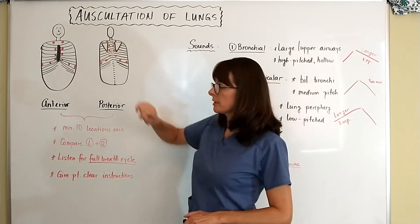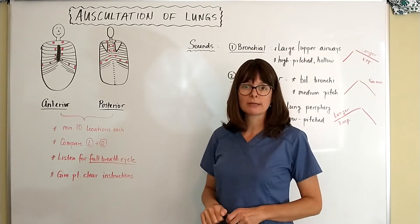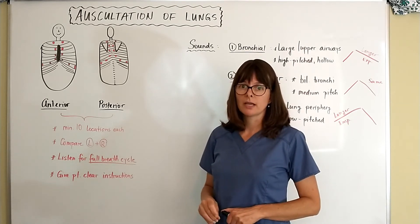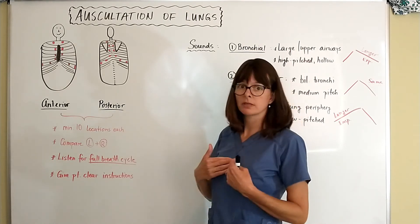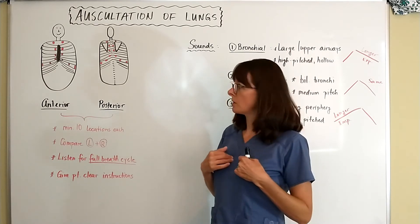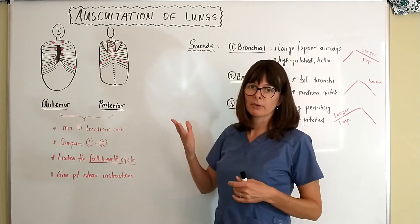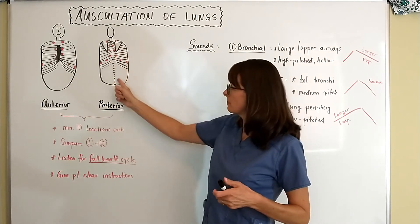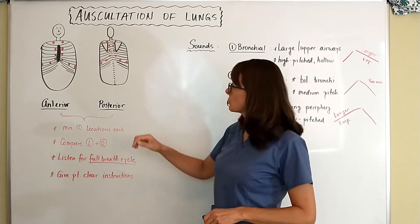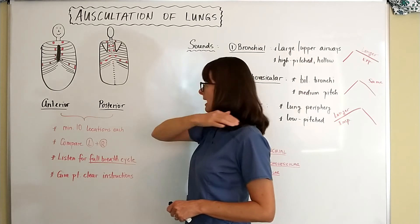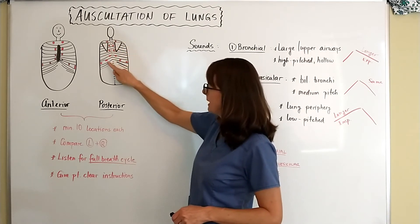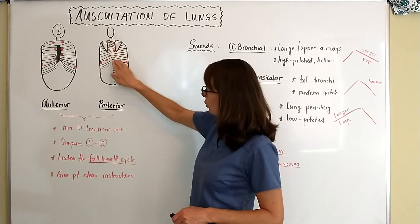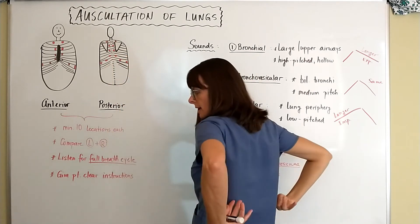Posteriorly, we want to avoid the scapulae — the shoulder blades — because just like the sternum, listening over them won't allow us to identify any abnormalities. We also want to go into the intercostal spaces rather than over the ribs, and stay away from the patient's spine, as that's bone too. We want to start above the shoulder blades on the patient's back, then work our way down between the shoulder blades and the spine, comparing right to left as we march our way down.